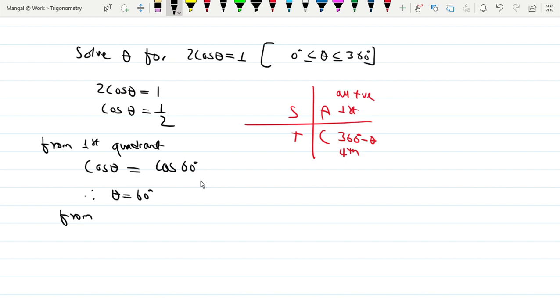From the fourth quadrant: the fourth quadrant value is 360 minus theta. So cos θ = 1/2 = cos(360 - 60) = cos 300°. Therefore θ = 300 degrees.